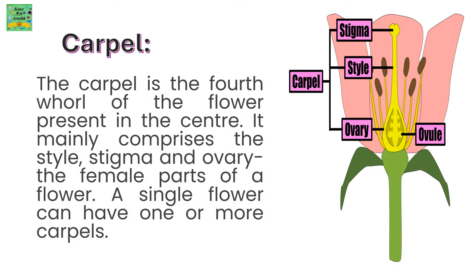The carpel is the fourth whorl of the flower, present in the center. It mainly comprises the style, stigma, and ovary — the female parts of the flower. A single flower can have one or more carpels.